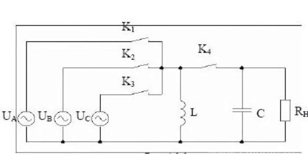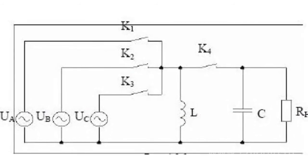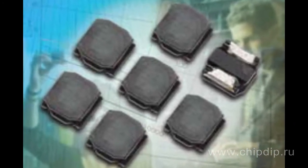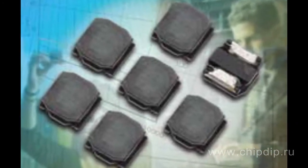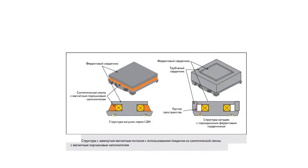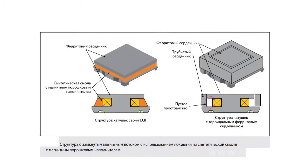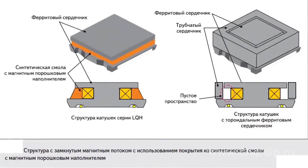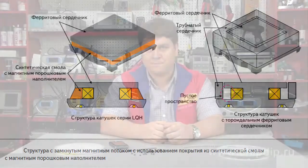The wire inductors are screened in order to prevent the dispersion of the magnetic flux. In the LQH production series of the Murata company, a structure with closed magnetic induction is employed. The winding is screened entirely by epoxy resin with magnetic powder loading, preventing the dispersion of the magnetic field.